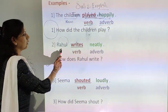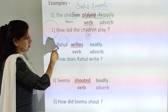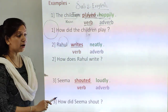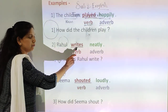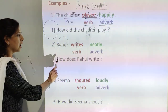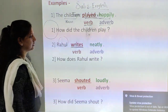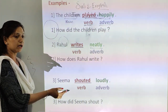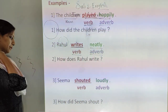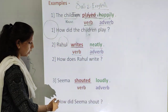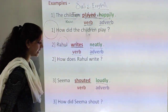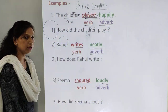Second example: Rahul writes neatly. Rahul is a noun. Adverbs tell more information about verbs. How does Rahul write? 'Write' is an action verb, and 'neatly' is an adverb. Next example: Sima shouted loudly. How did Sima shout? 'Shouted' is an action word — a verb — and 'loudly' is an adverb. Sima shouted loudly.